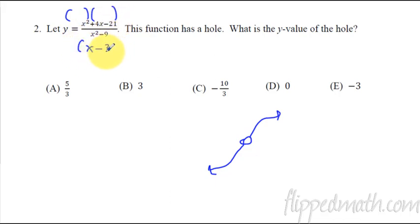So this is going to be (x minus 3)(x plus 3). What's this one? (x plus 7)(x minus 3). The x minus 3 will cancel. If x minus 3 cancels, that's the hole.